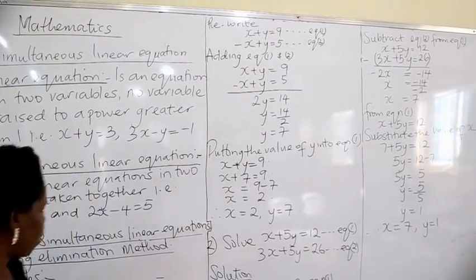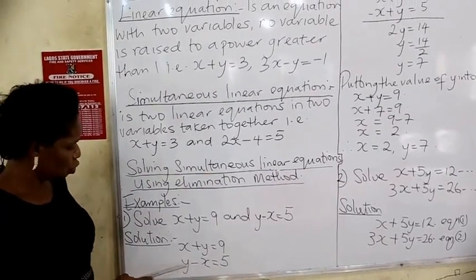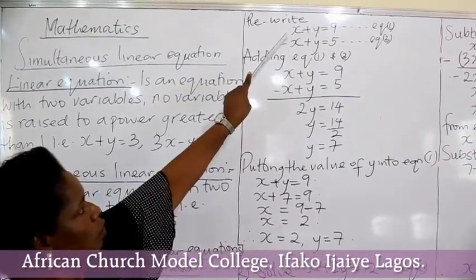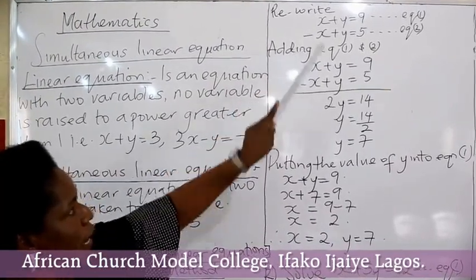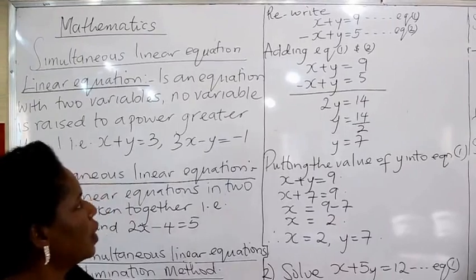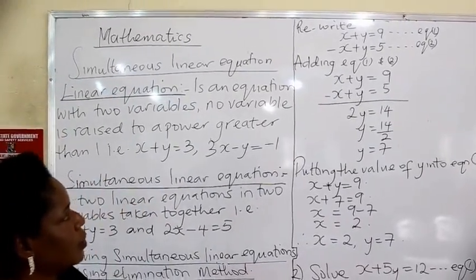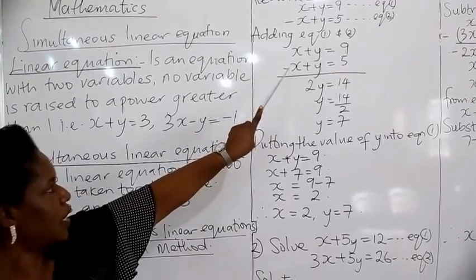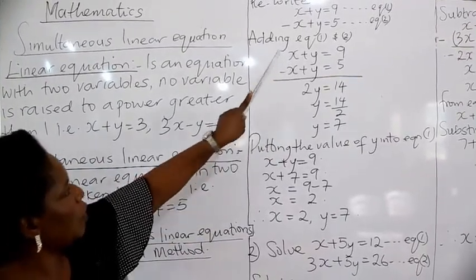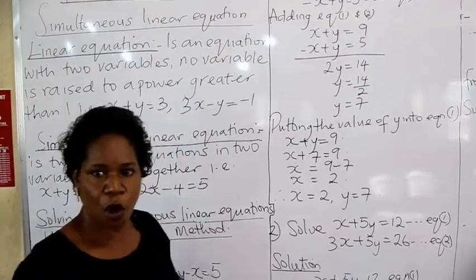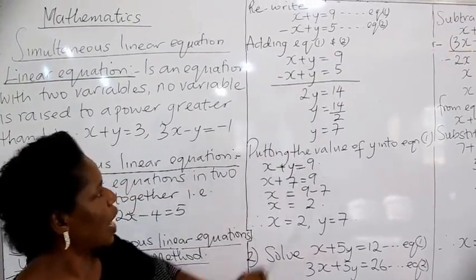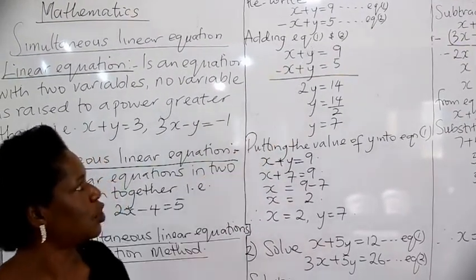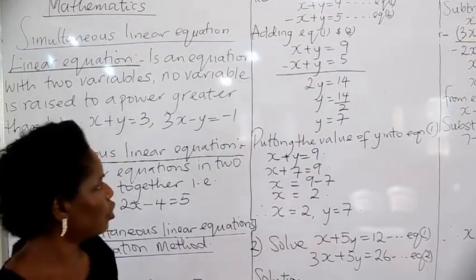I have rearranged so that x in equation 2 is now under x in equation 1. We now have x plus y equals to 9 in equation 1, and negative x plus y equals to 5 in equation 2. Now let us consider their numerical coefficients. In equation 1, the numerical coefficient of x is 1. Likewise, in equation 2, the numerical coefficient of x is also 1. The numerical coefficient of y in equation 1 is 1, and in equation 2 it is also 1. So we can eliminate either x or y.